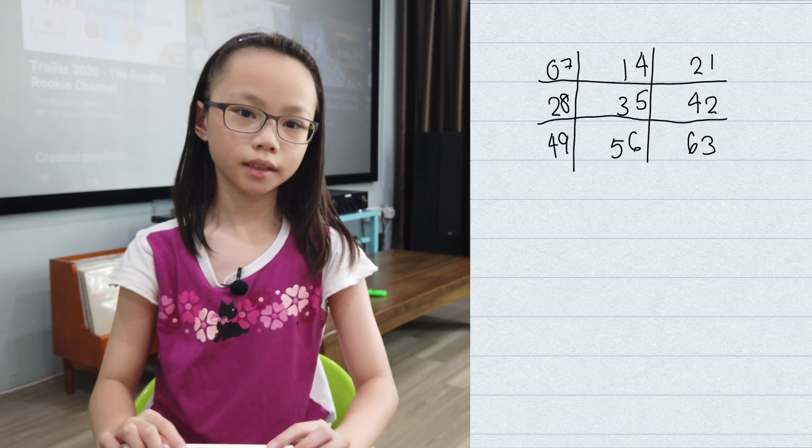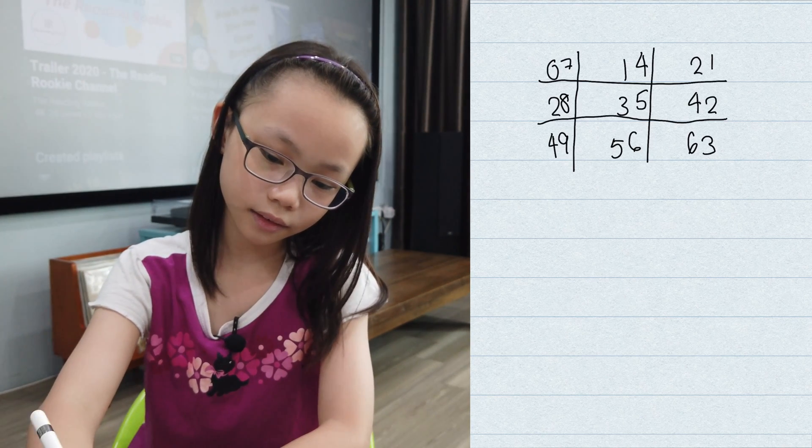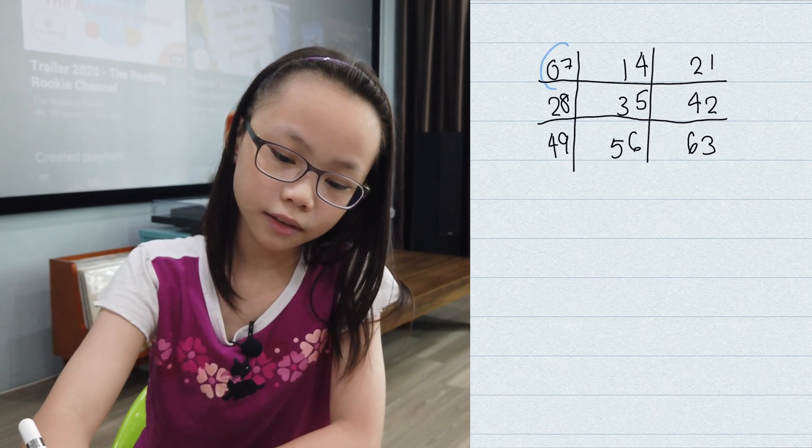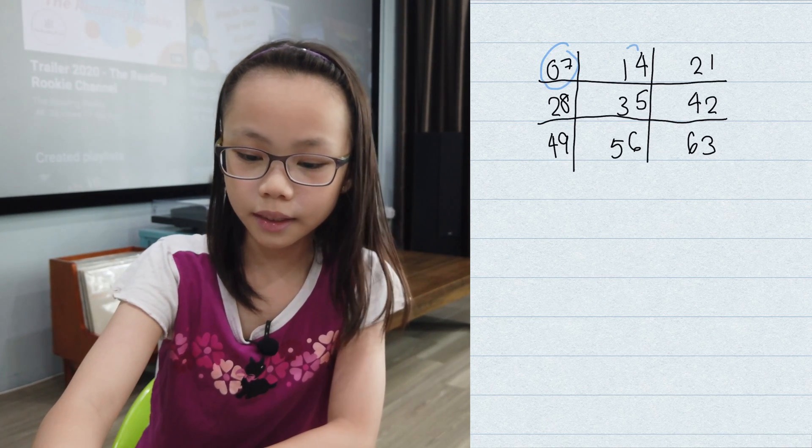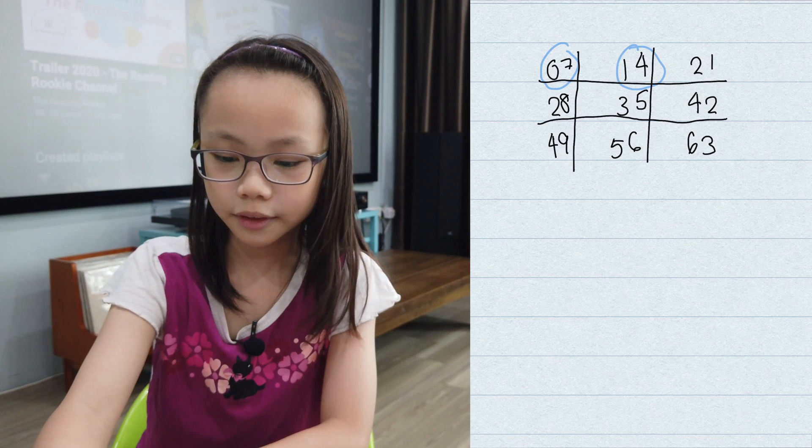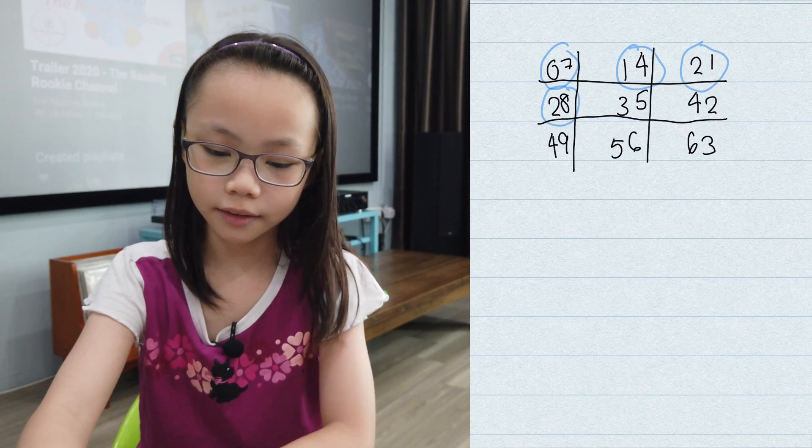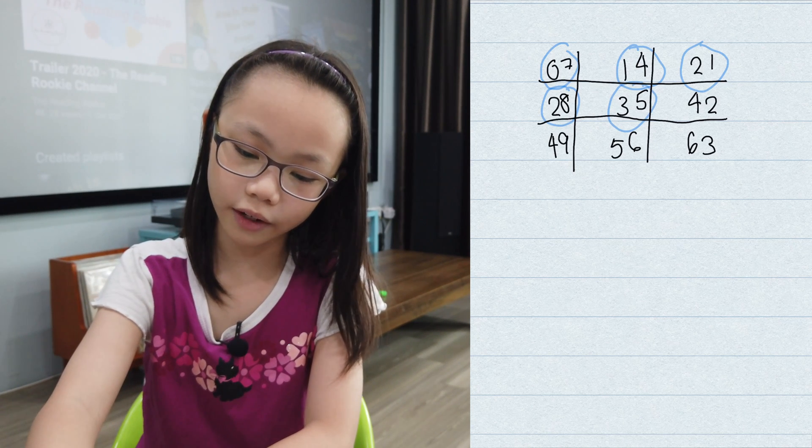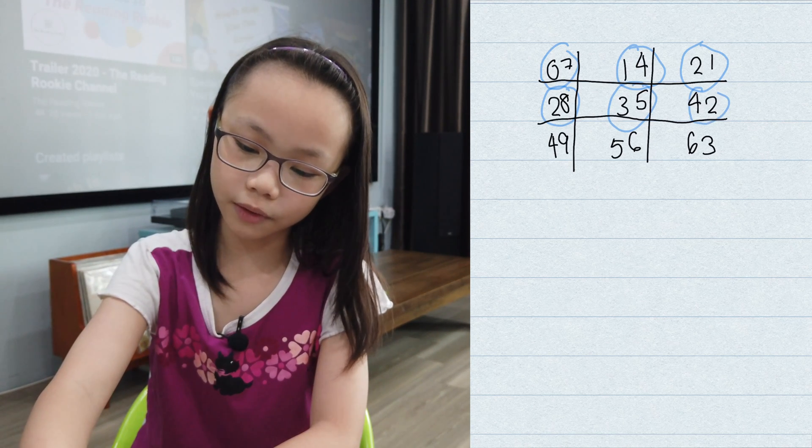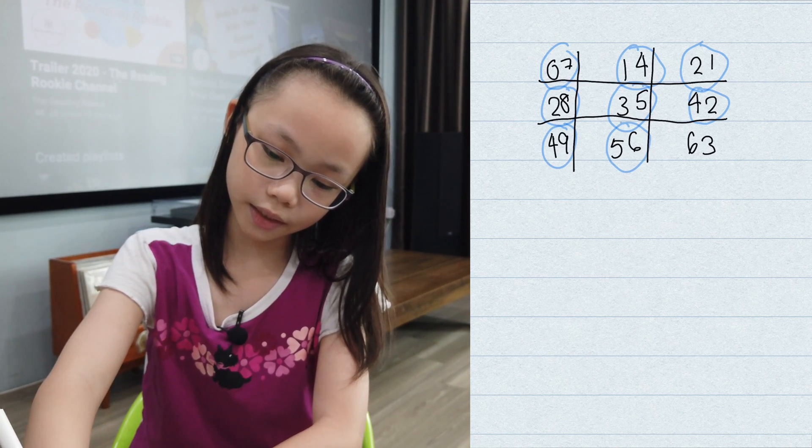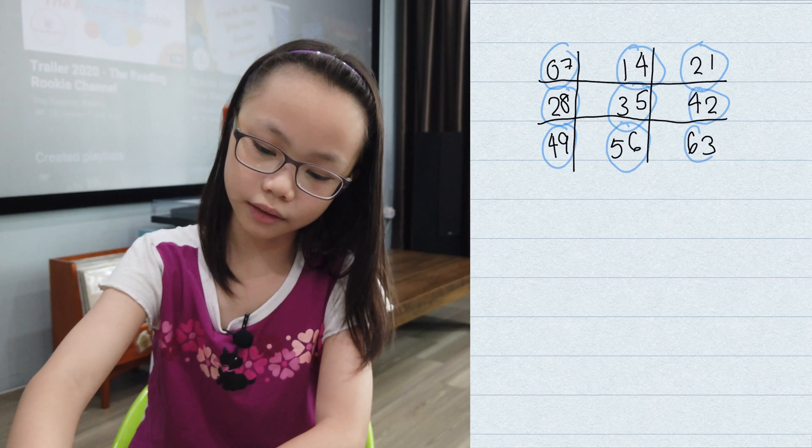That's the 7 times table trick. Let's look at it. 1 times 7 is 7, 2 times 7 is 14, 3 times 7 is 21, 4 times 7 is 28, 5 times 7 is 35, 6 times 7 is 42, 7 times 7 is 49, 8 times 7 is 56, 9 times 7 is 63.